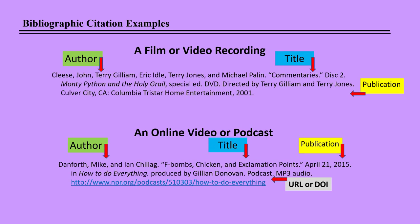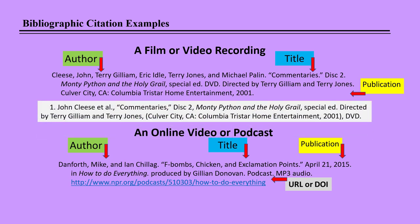You can list more authors in the bibliographic citation than in the footnote citation, so the rules are a little different. As you can see in the footnote citation, because there were more than three authors, we used the abbreviation et al. to indicate and others. In the bibliographic citation, we are allowed to list up to seven authors before using et al. So here we go listing all the authors in this citation, followed by a period. Also notice that the DVD, or type of media, has moved from the end of the footnote citation to after the title and before the director in the bibliographic citation. Must be one of those Chicago things.